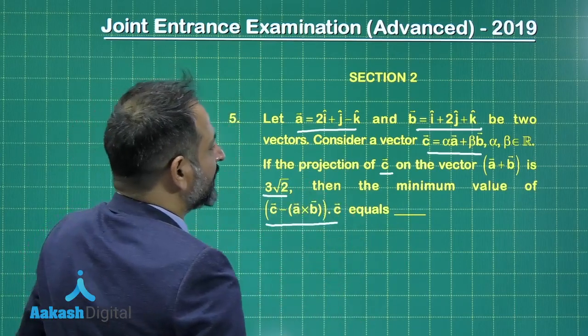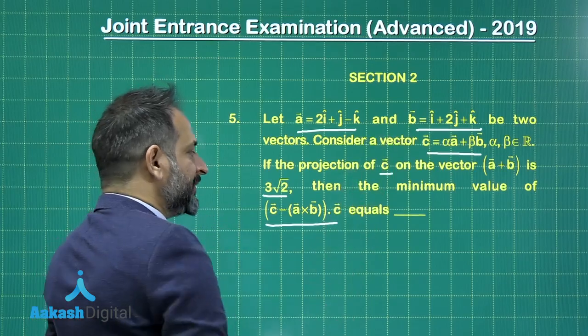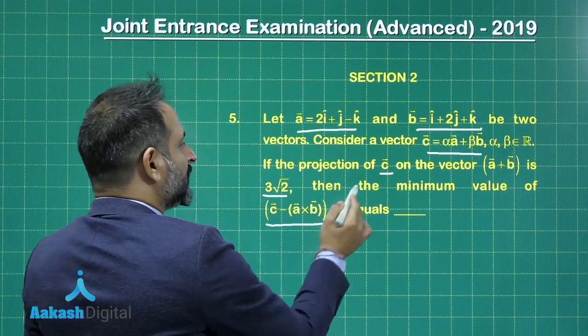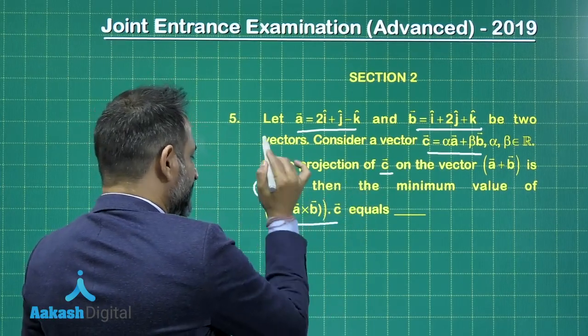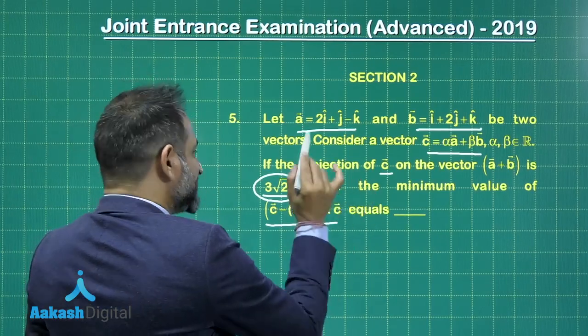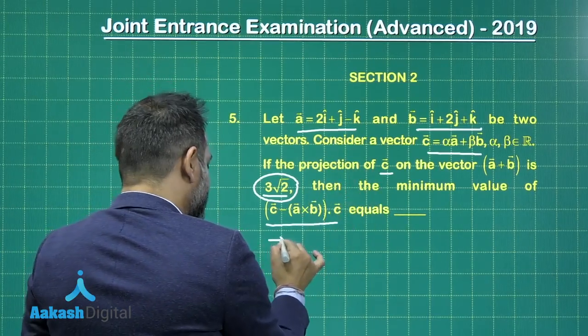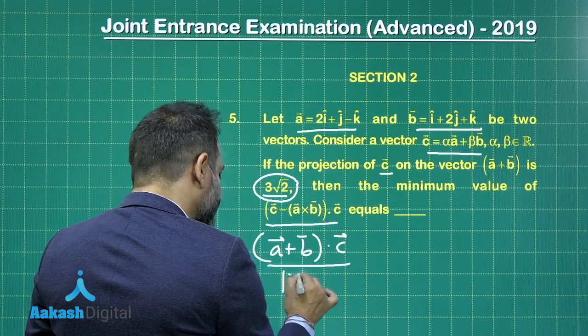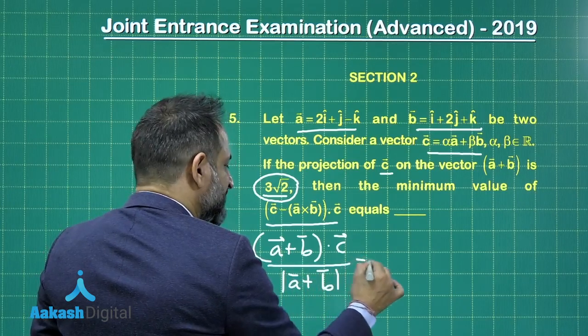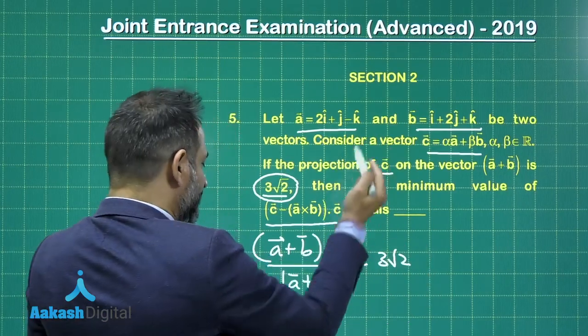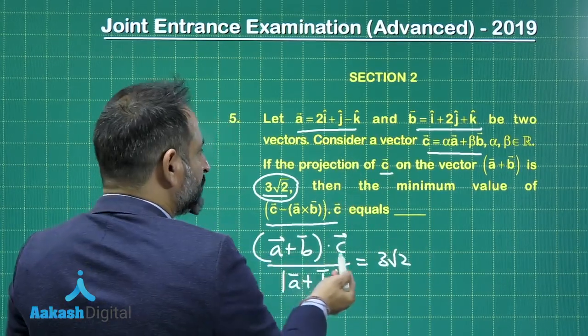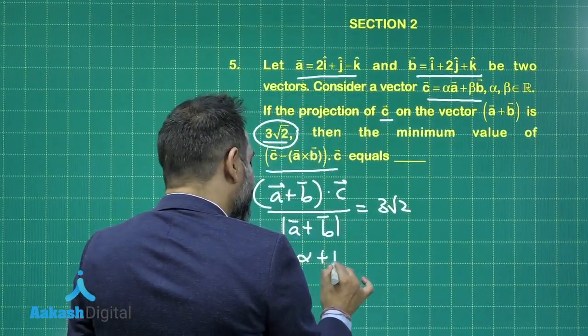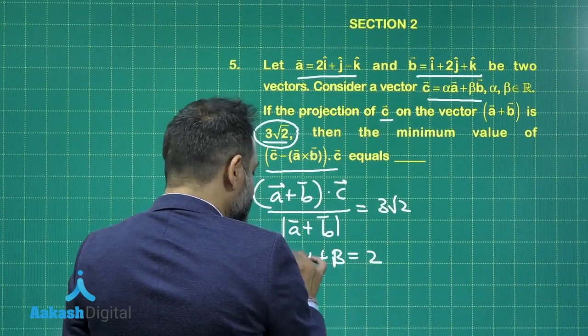Now here you can notice the variables are alpha and beta, a and b are given. So let us say, now the first equation we will get here is from the projection, this data is given. Now the projection of c on a plus b, we know it is a plus b dot c upon magnitude of a plus b and this is given 3 root 2. Now a plus b can be easily calculated, if you put the value c here, you will get here first equation and that is alpha plus beta is equal to 2. So this is the first equation.